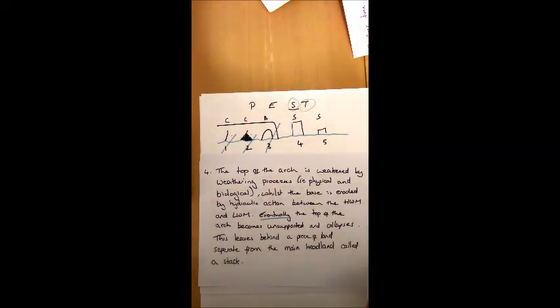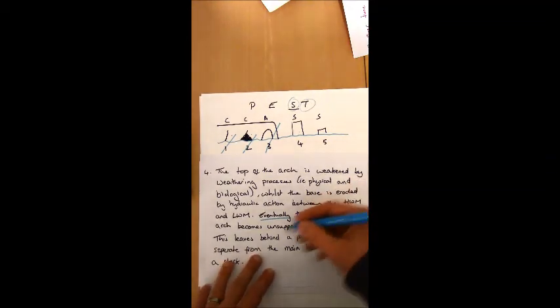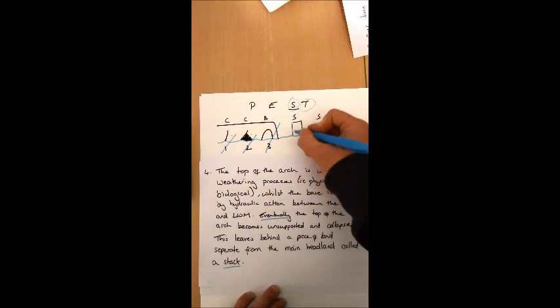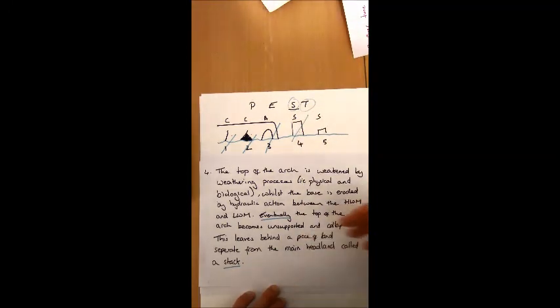When it does collapse, this is going to leave behind a piece of land that is separate from the main headland which we call a stack. Again, we can cross that off there. We're now making sure that we're following that sequence all the way through.